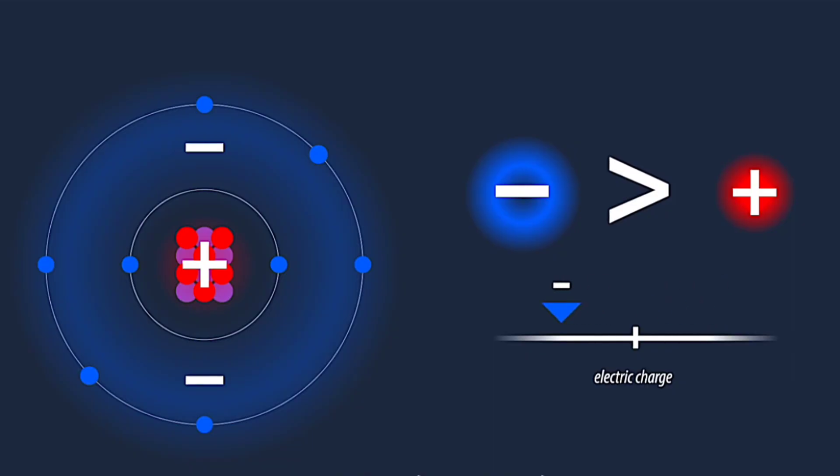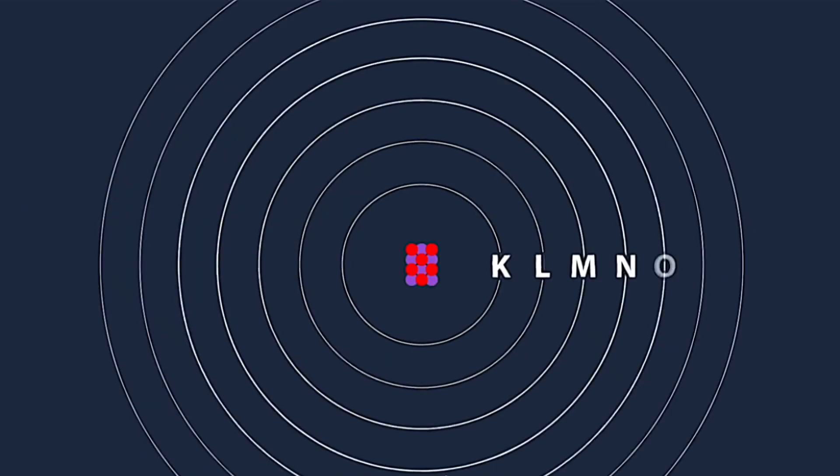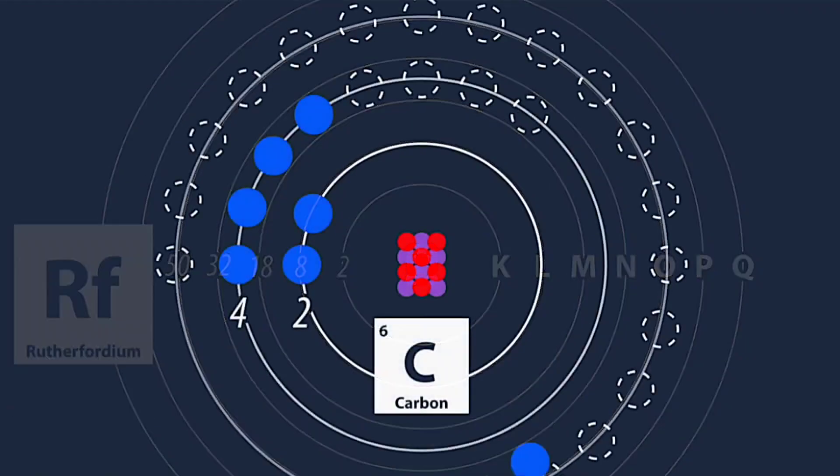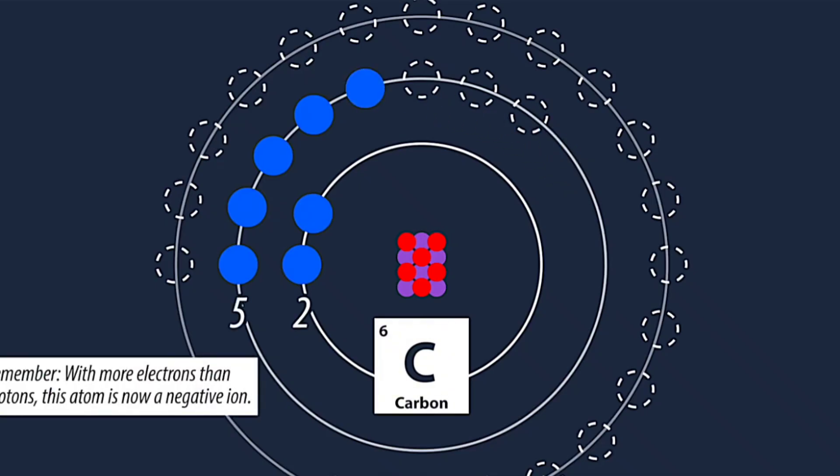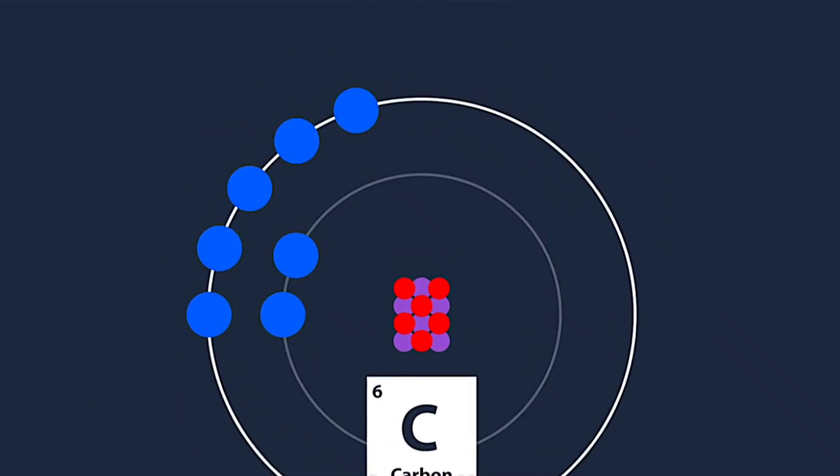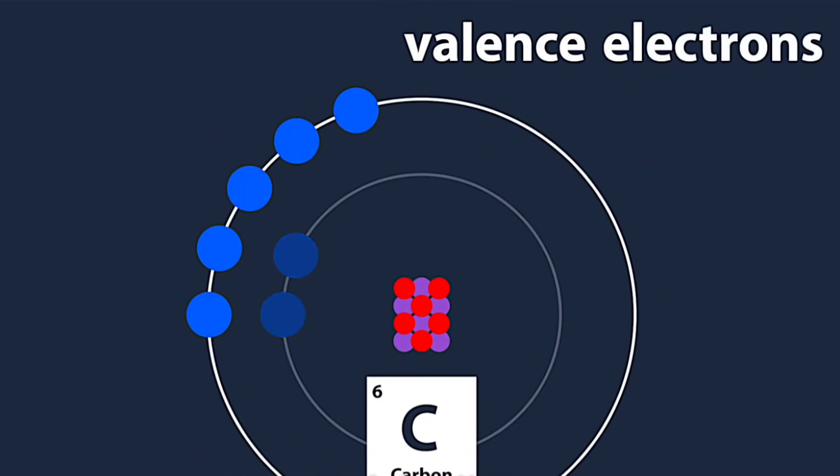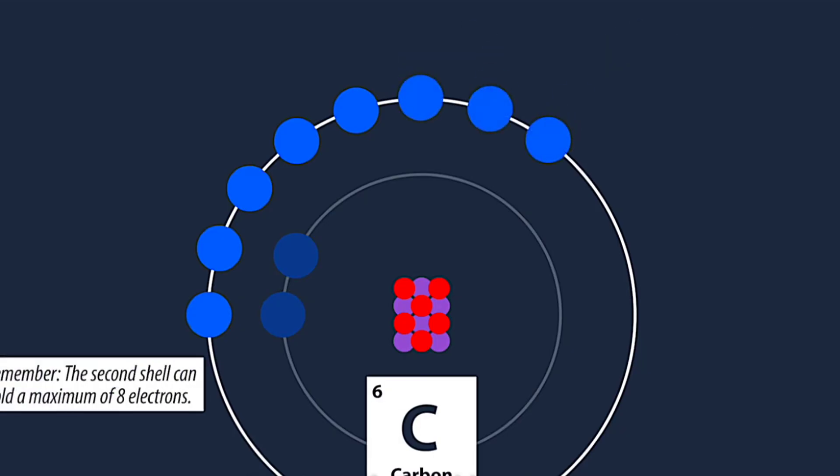At the same time, since each electron layer of an atom can accommodate a limited number of electrons, the newly added electrons will always give priority to filling the outer electron layer with vacancies. When the outer electron layer is filled, the atom will return to a stable state.